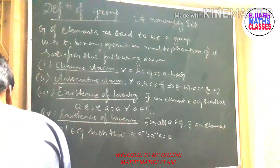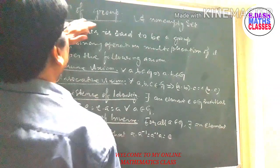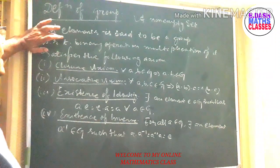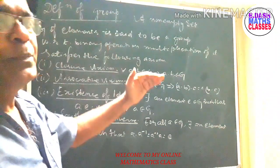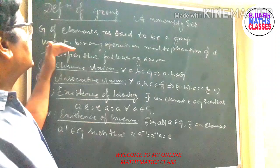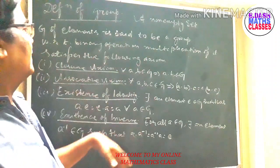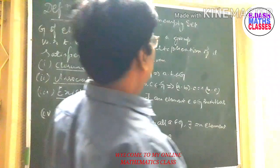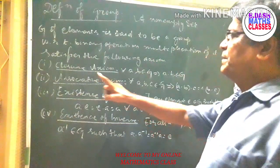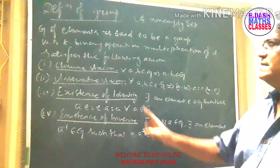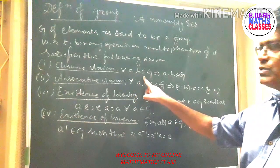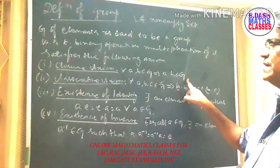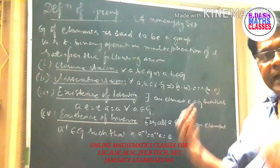Here you see the definition of a group. A non-empty set G of elements is said to be a group with respect to the binary operation of multiplication if it satisfies the following axioms. The first one is the closure axiom: for all a, b belonging to G, a into b belongs to G.